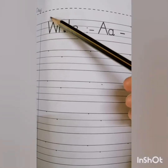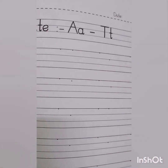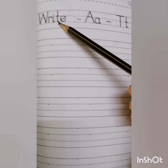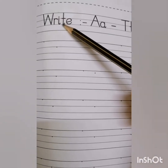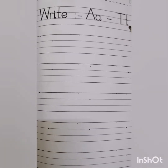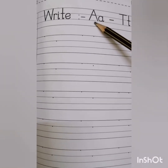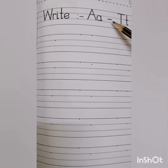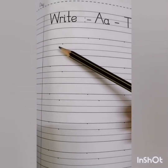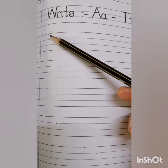Now, this is page number 101. First, you write the day and date on the top of the page. Then write A, A, T, T. Now start writing here. Put your pencil on the dot.